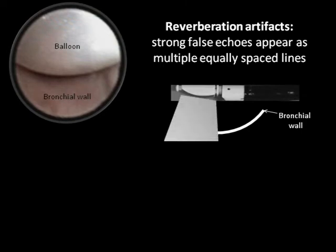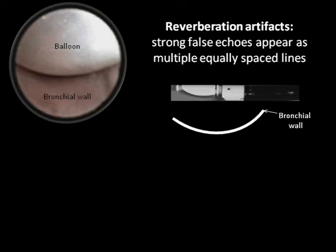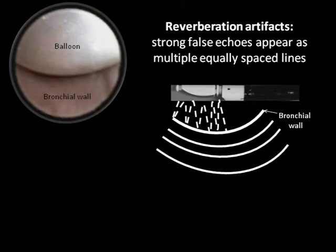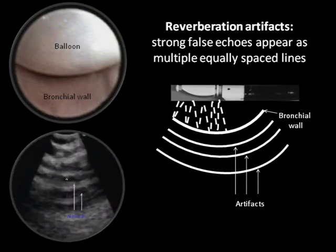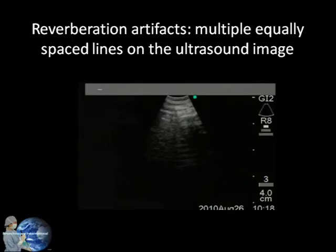Reverberation artifacts are strong false echoes that appear as multiple equally placed lines on the ultrasound image. These occur when the water-filled balloon of the EBUS bronchoscope is not in intimate contact with the airway wall. Subsequently, ultrasound waves are repeatedly reflected between the high-reflective airway wall and the transducer. Here is an example of reverberation artifact.